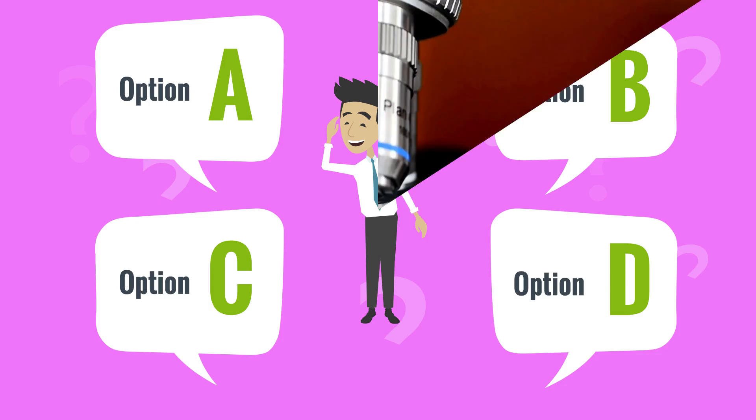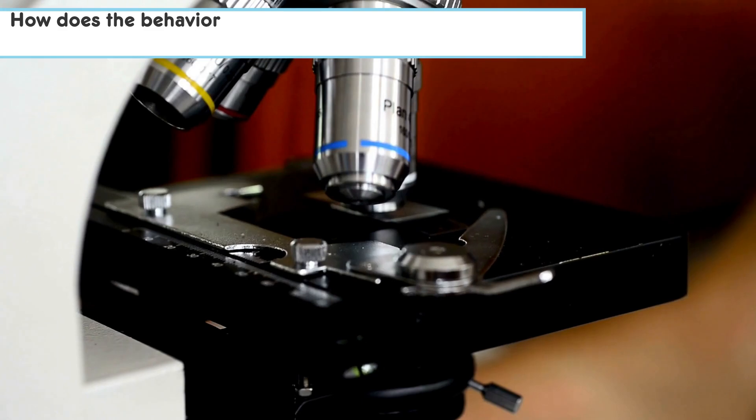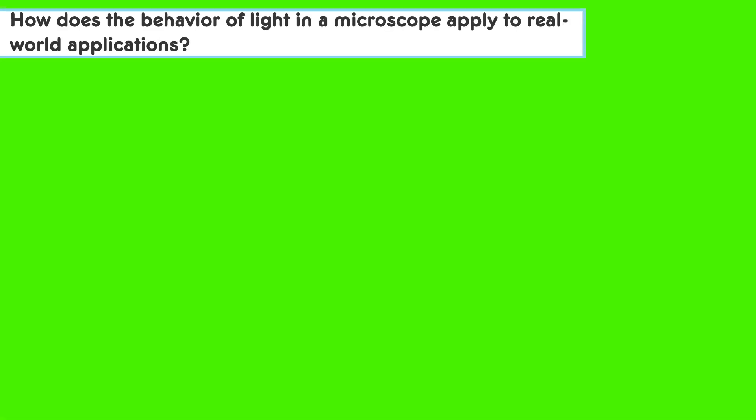Here's your question for part B. Based on your understanding from part A, how does the behavior of light in a microscope apply to real-world applications? Go ahead and select two correct answers.